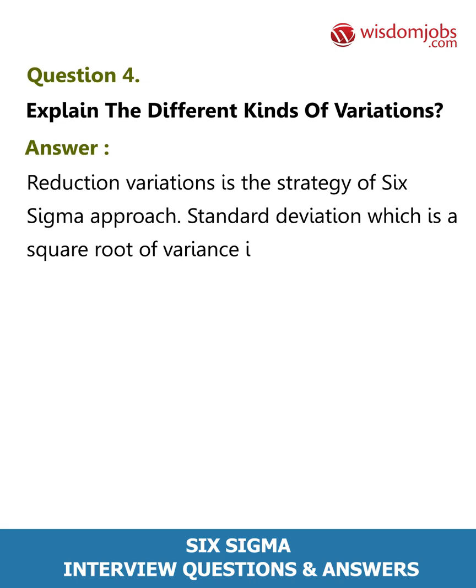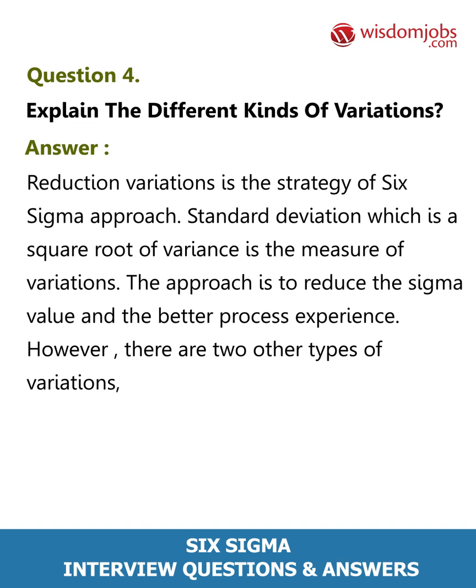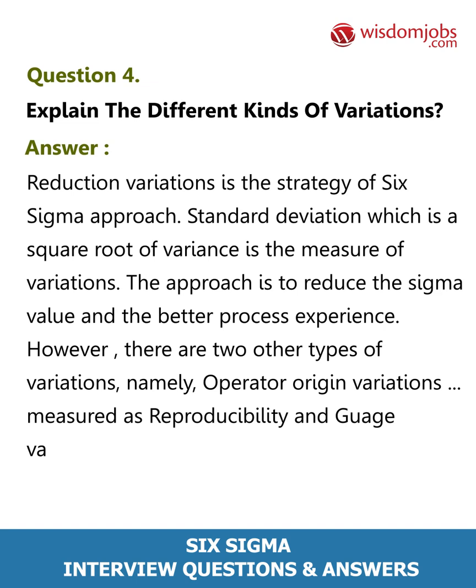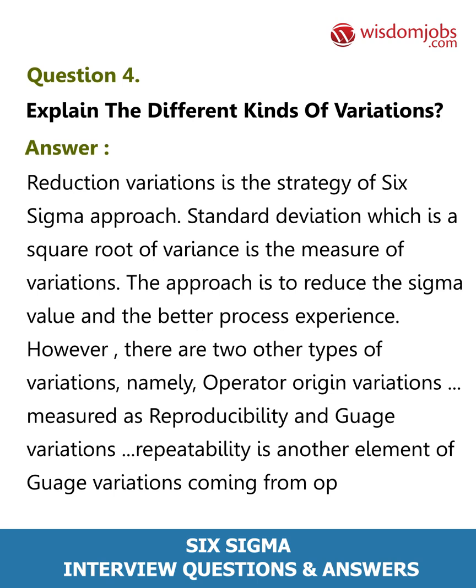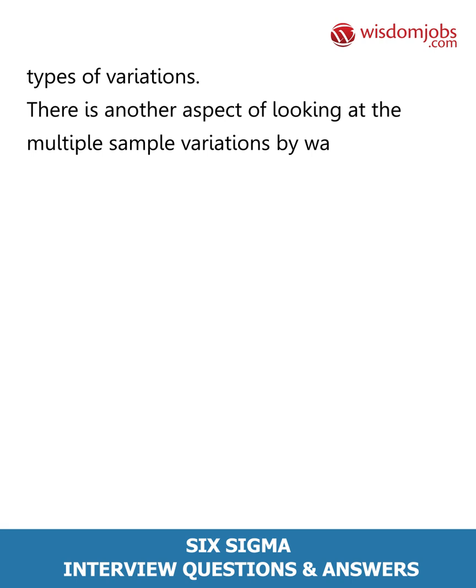Question 4: Explain the different kinds of variations. Answer: Reduction of variations is the strategy of the Six Sigma approach. Standard deviation, which is the square root of variance, is the measure of variations. The approach is to reduce the sigma value for a better process experience. There are two other types of variations: operator origin variations, measured as reproducibility, and gauge variations. Repeatability is another element of gauge variations, coming from operator origin. Measurement system analysis deals with these types of variations, including multiple sample variations.